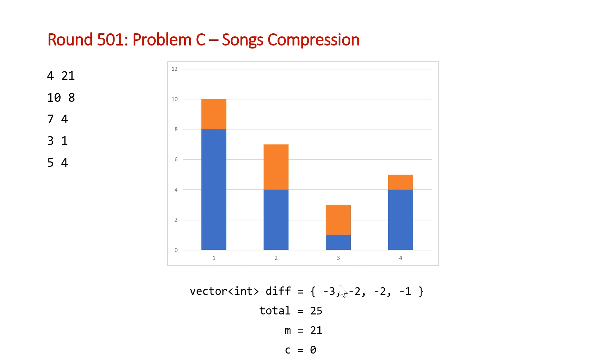Our next step is going to be to sort our vector diff. Now we have these sorted from largest to smallest. And now we're just going to one by one subtract these from our total until we can get our total size below our value m. If we decrease total by our first element in our vector diff, that gets us to 22. And we've now compressed one song. And if we do that with our second song, we're now going to get our total to 20, which is less than 21. So now we've compressed two songs and we have met the requirements of the problem.